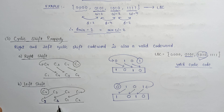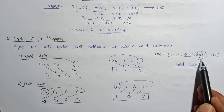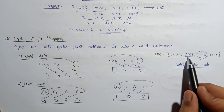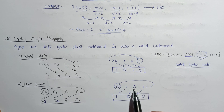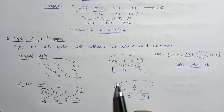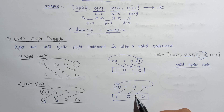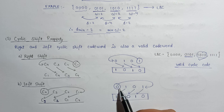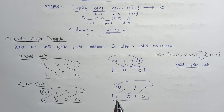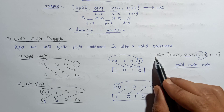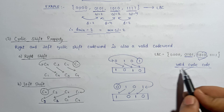Let's verify the left shift using the codeword 0101. Performing the left shift: 1 moves to the first position, 0 shifts left, 1 shifts left, and the leading 0 wraps to the last position, giving us 1010. Checking if 1010 is a valid codeword — yes, it is present inside this linear block code. So we can say it is a valid cyclic code.